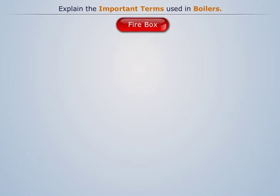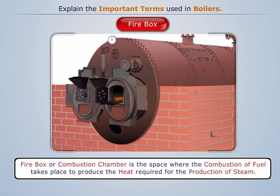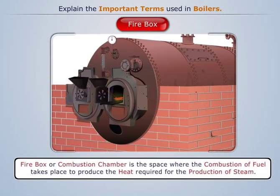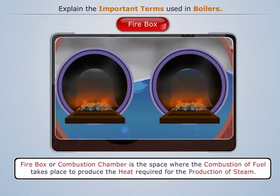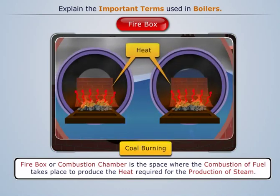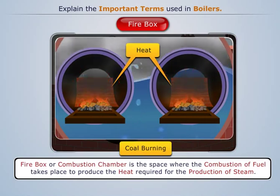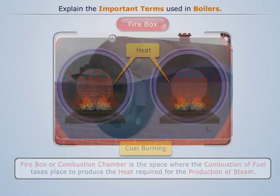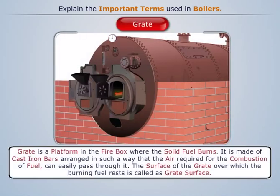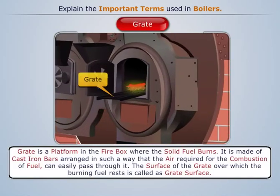Firebox: it is also known as combustion chamber. It is the space where the combustion of fuel takes place to produce the heat required for the production of steam. Grate: it is a platform in the firebox where the solid fuel burns.